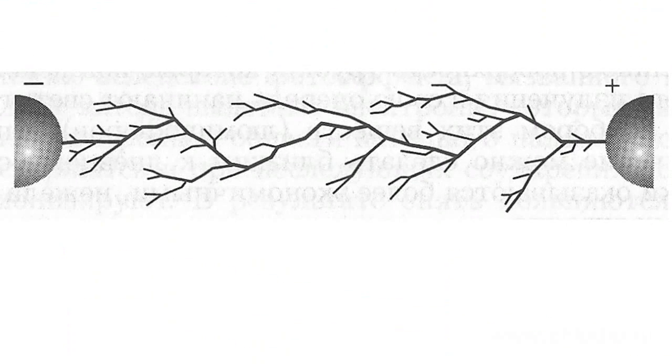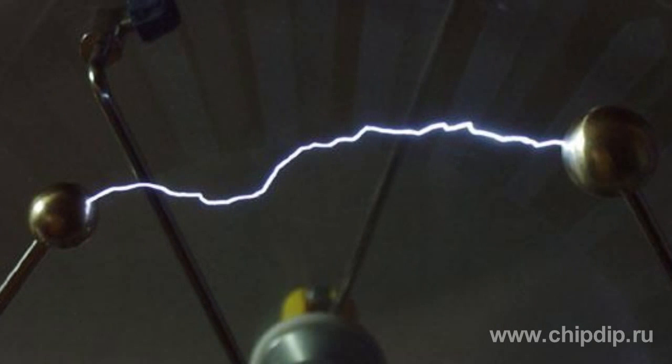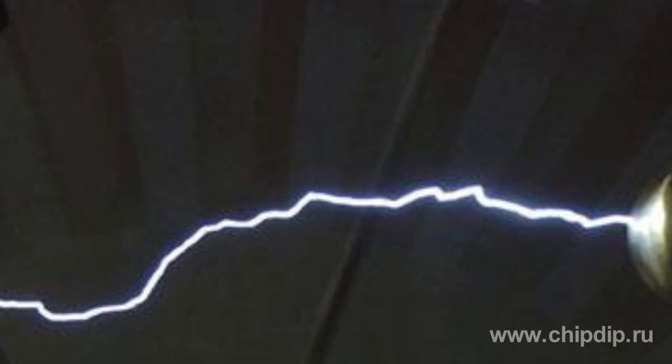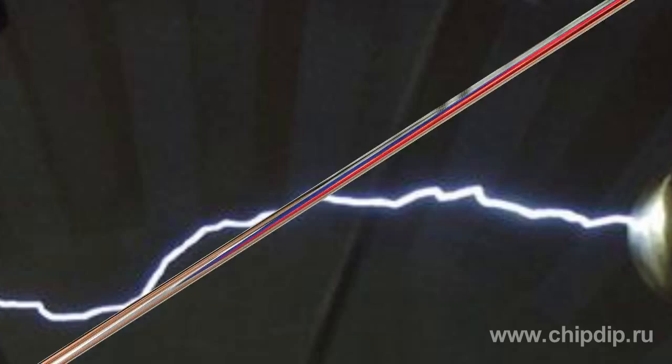Spark discharge is one of the unsteady self-maintained discharges in gas. It appears between electrodes in an electric field which is not much different from a uniform field — for example, between two flat electrodes or two sufficiently large spheres. An electric spark looks like a bright glowing thin channel which connects both electrodes, and it usually has a complex curved and branched structure.